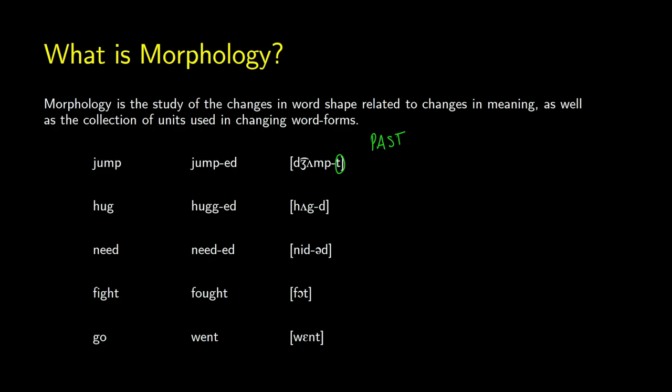Hugged — we also add 'ed' in writing, but it's being pronounced as a 'd': hugged. In a word like needed, we get the 'ed' in spelling, but it's being pronounced a little bit differently as 'ud': needed.